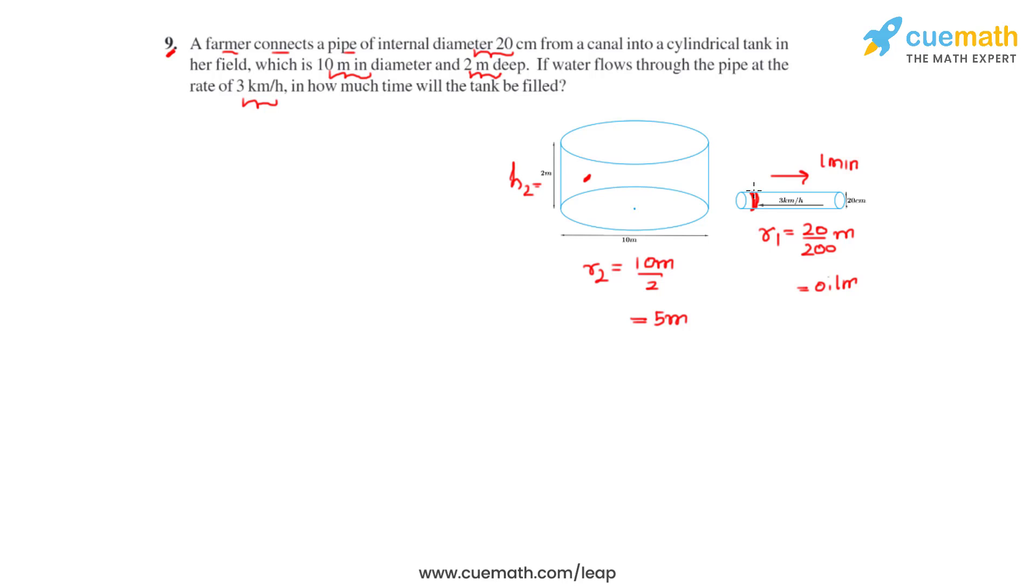The area of cross section of the pipe will be the area of the circle with the same radius. So that will be π R1 squared. So that is π times 0.1 the whole squared, and that equals 0.01π meter squared.